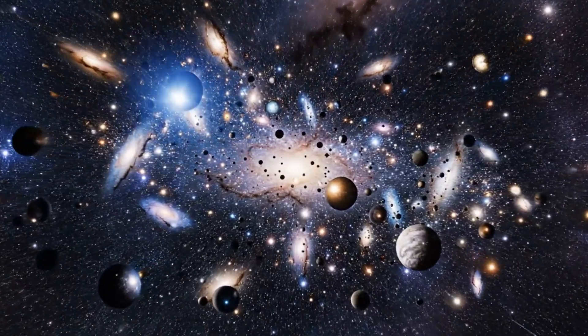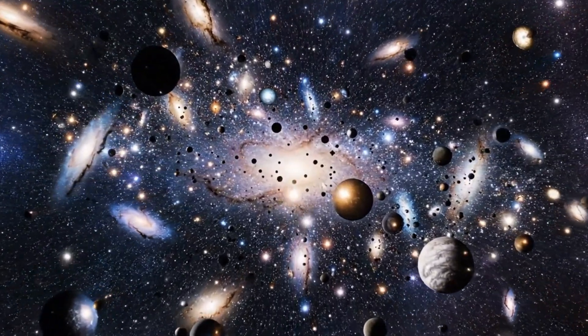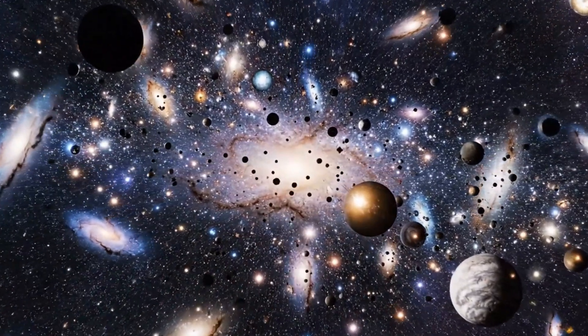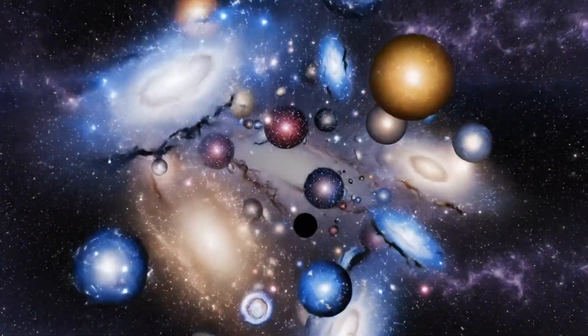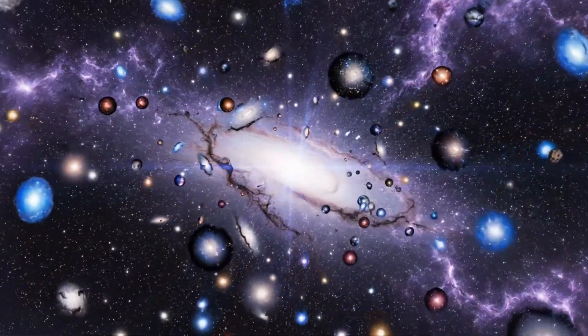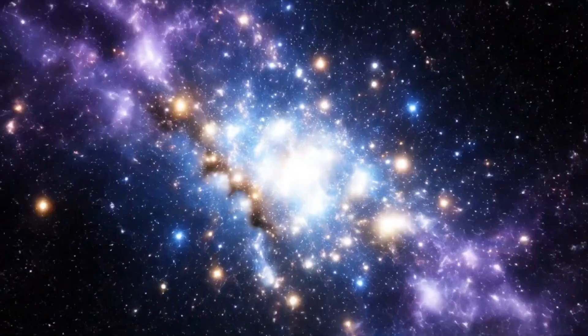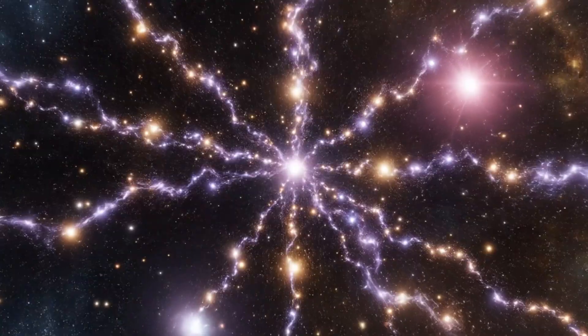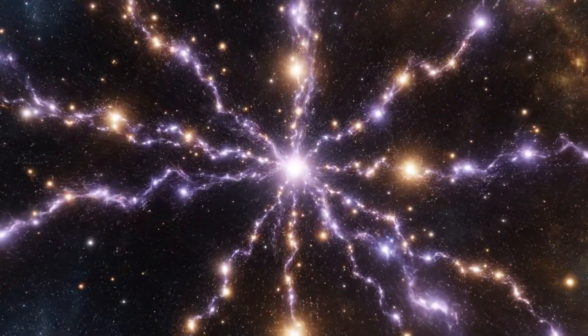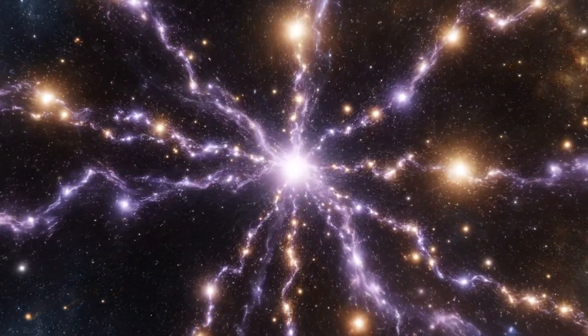We live inside a small cluster of about 50, the local group. Zoom out more and you'll see thousands, forming the Virgo supercluster. And beyond that, superclusters connect to even grander structures, woven together into something extraordinary.